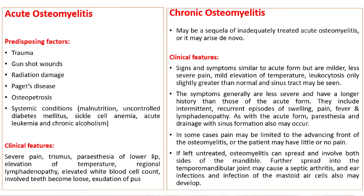Coming to the classification of osteomyelitis, we broadly divide it into acute and chronic osteomyelitis. In acute osteomyelitis, all the symptoms are very severe. We can see severe pain, trismus, paresthesia of the lower lip, elevation of temperature, regional lymphadenopathy, elevated white blood cell count, involved teeth becoming loose, and sometimes exudation of pus.